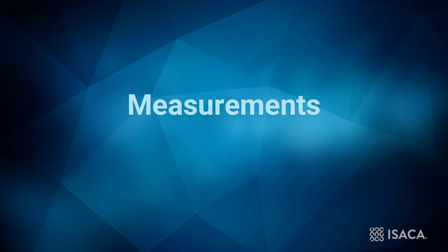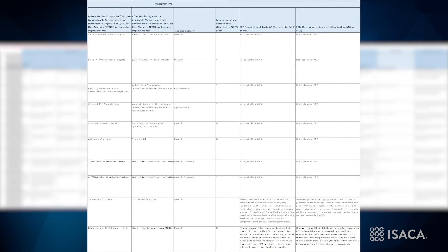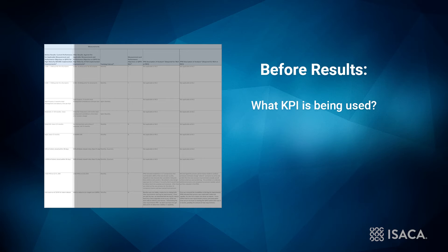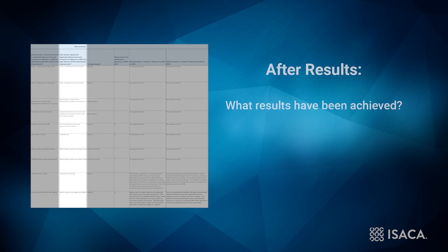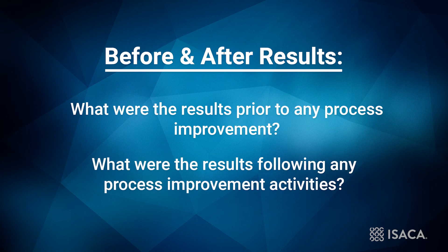The next section — Measurements — deals with describing the specific measures an organization uses to track its achievement of business and performance objectives. The first column identifies the specific key performance indicator used. Organizations with high maturity may use the quality and process performance objective. This column specifies the details and target results of the measure. The second column is used to identify achieved results. Whenever possible, these two columns should indicate what the results were prior to any process improvement and what the results were following the process improvement activities.